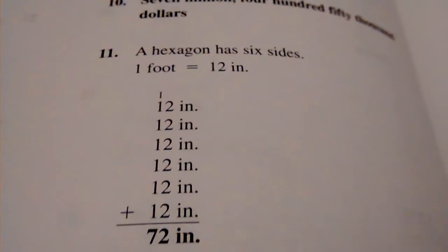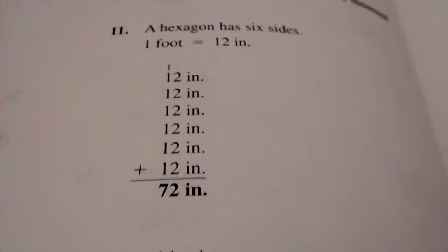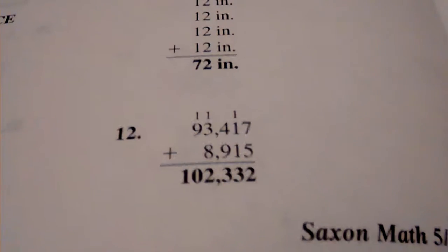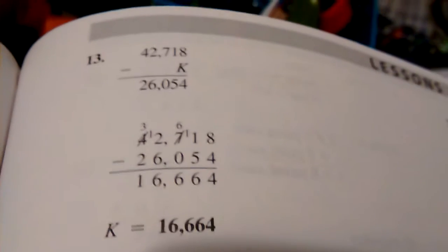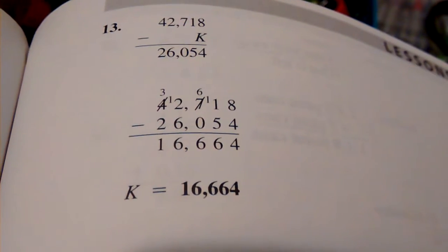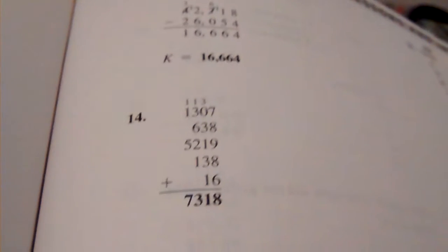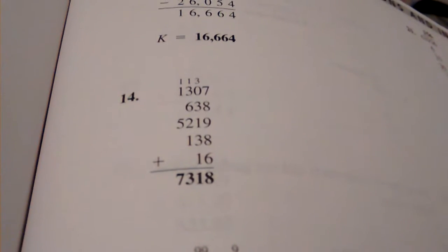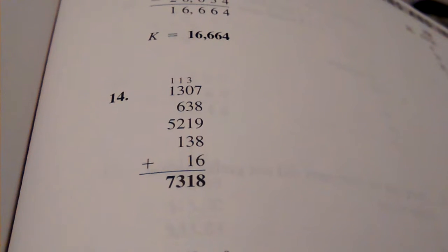Number 11, 72 inches. Number 12, $102,332. Number 14, K equals 16,664. Number 14, 7,318.